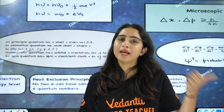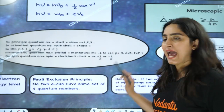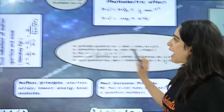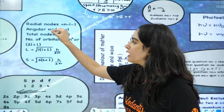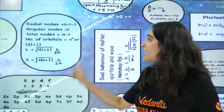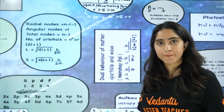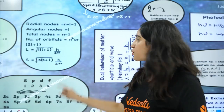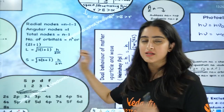For example, if L = 2, then M will be −2, −1, 0, +1, +2. S has only two values: +½ and −½. Radial nodes = N − L − 1, angular nodes = L, and total nodes = N − 1. Number of orbitals = N² or 2L + 1.